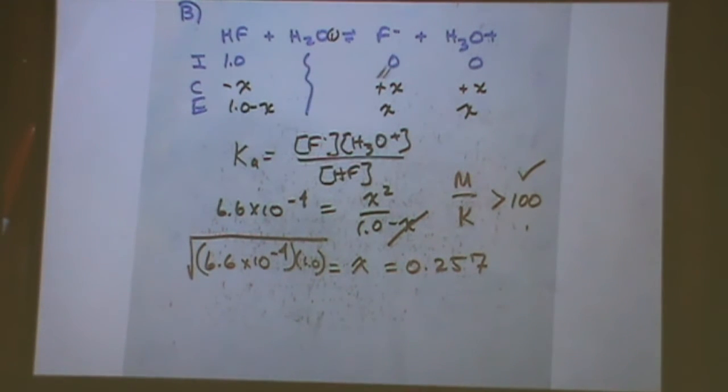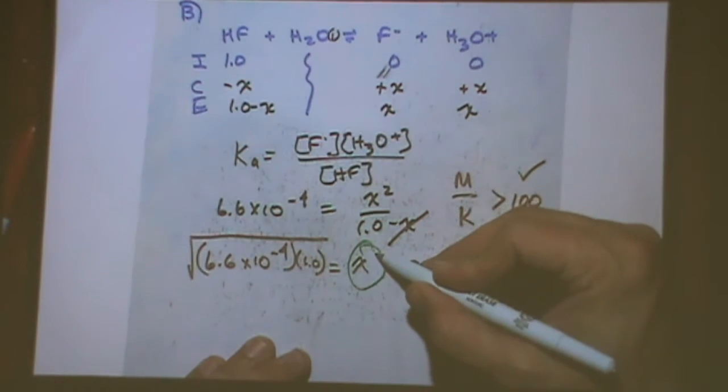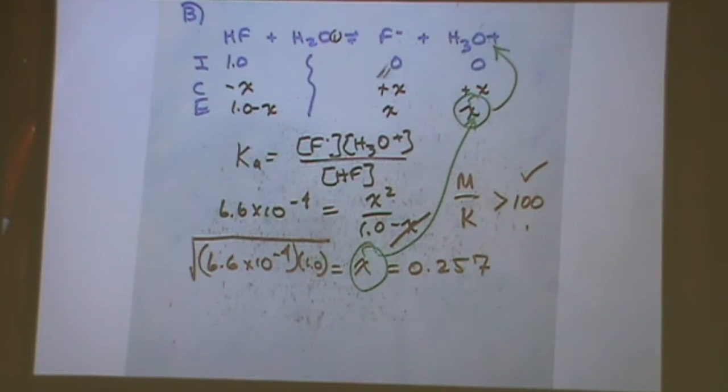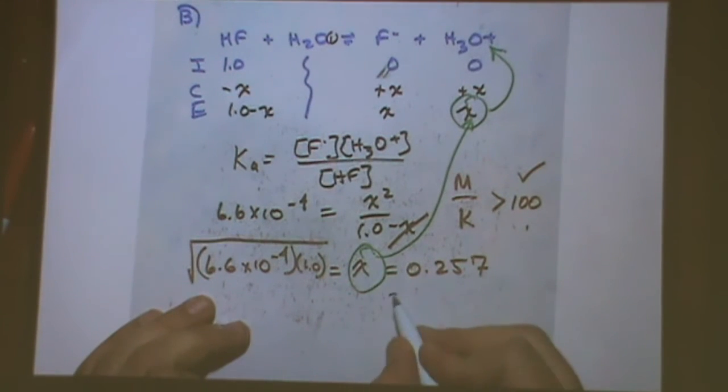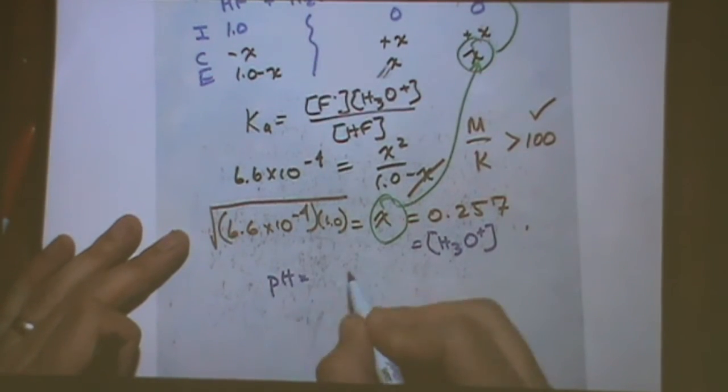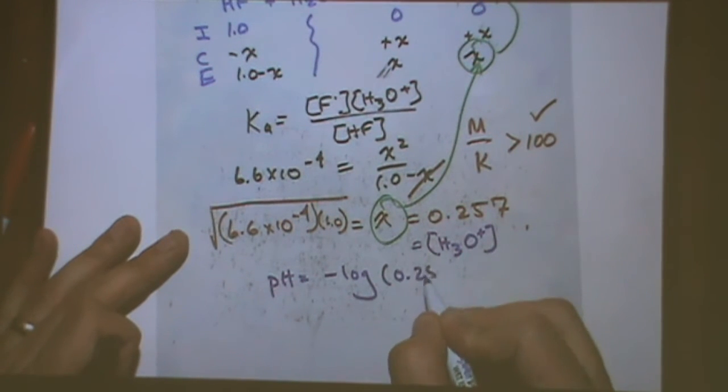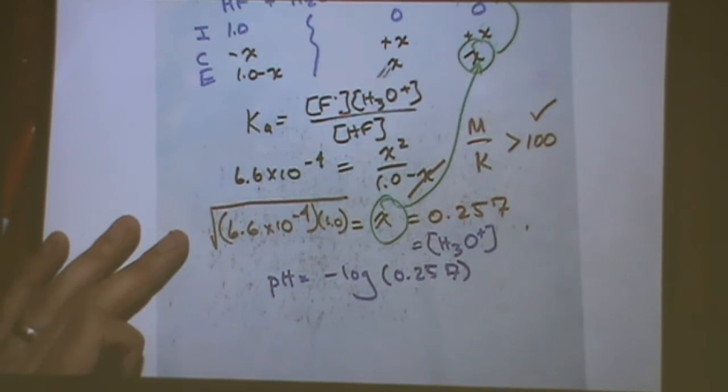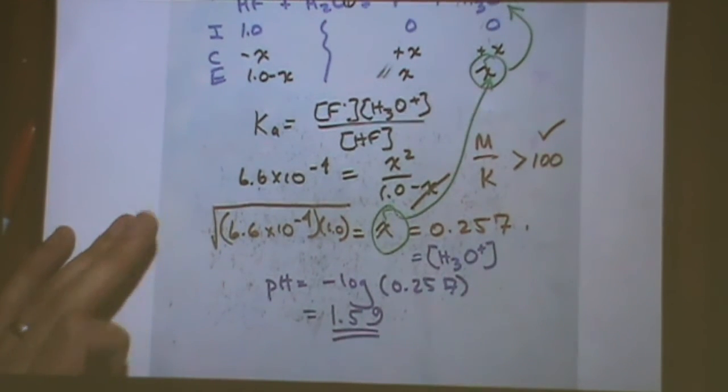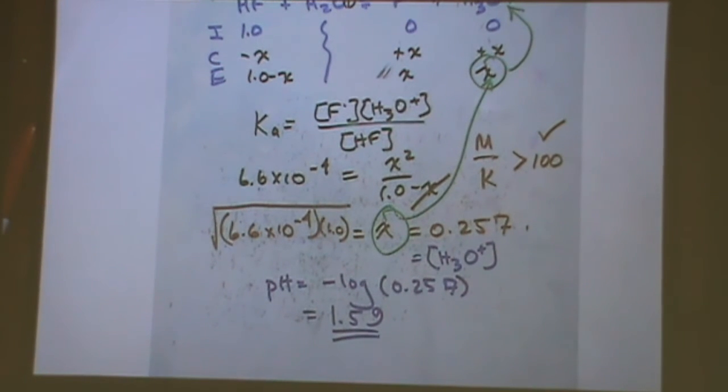So this is going to turn out to be x that equals 6.6 times 10 to the minus 4 times 1. And I'm taking the square root of that. So that was my x value. I got 0.0257 for my x value. Now, I have to look at my ice table and see why is that interesting. Well, x here is this x here, which is the H3O plus concentration. And that's what it should be for weak acids. So this is H3O plus.